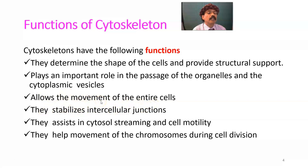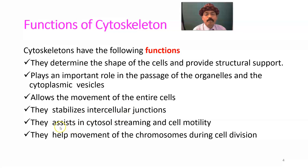The cytoskeleton allows movement of the entire cell — for example, phagocytic cells such as neutrophils and macrophages. It stabilizes intercellular junctions like macula adherens, zonula adherens, and the intercalated disc area of cardiac muscle. It assists in cytosol streaming and cell motility, and helps in the movement of chromosomes during cell division via the mitotic spindle. The chromosome parts move to the poles due to shortening of microtubules.